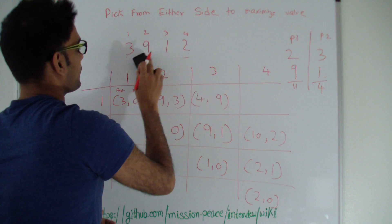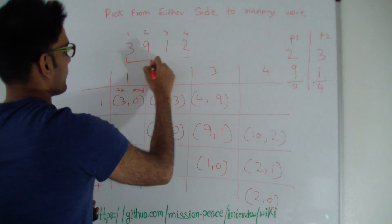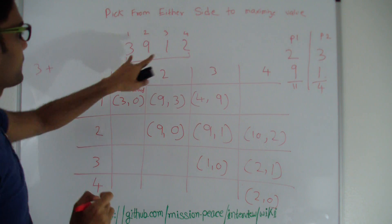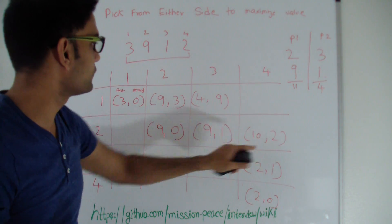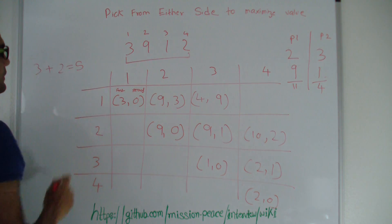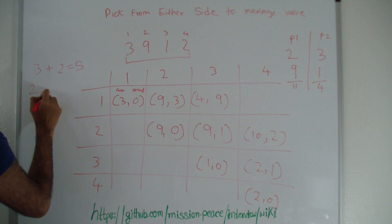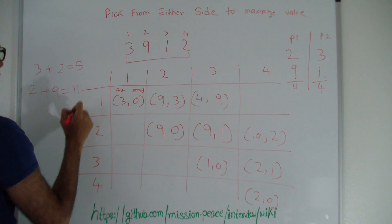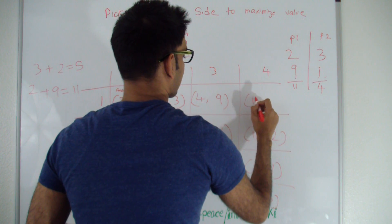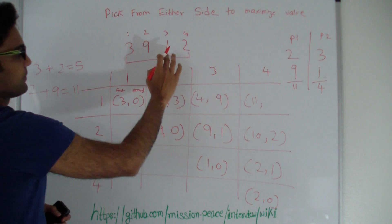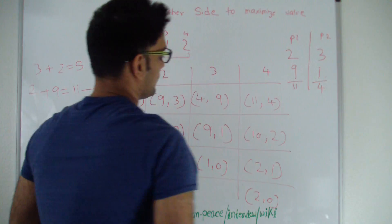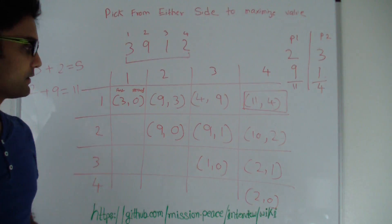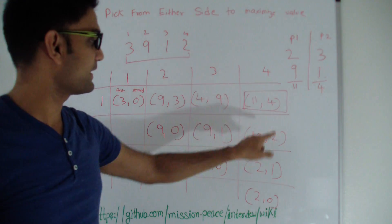Now let's see how we pick when we consider the entire array together. If I pick 3 first, the max I can get is 3 plus second in cell (2,4), which is 2 — giving 5. If I pick 2 first, the max I can get is 2 plus second in cell (1,3), which is 9 — giving 11. So I'll clearly pick 2, giving me 11, and the second player gets 3 plus 1 = 4. If both players play optimally, the first player gets 11 points and the second player gets 4 points.